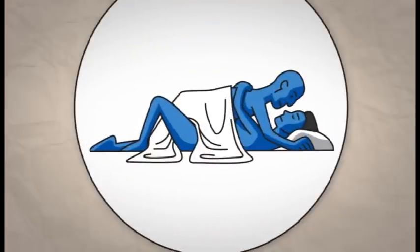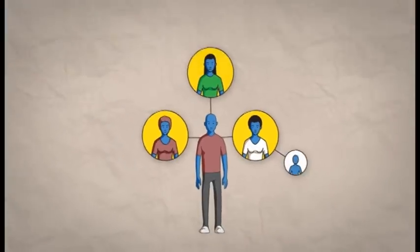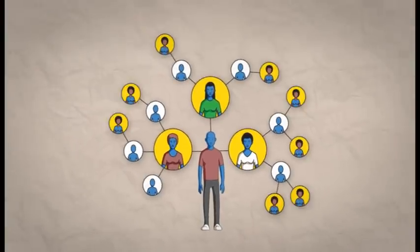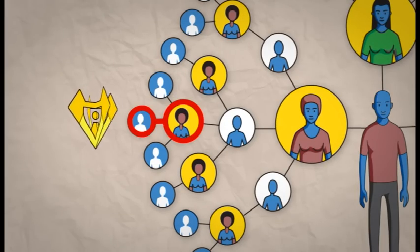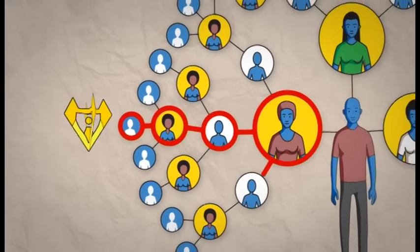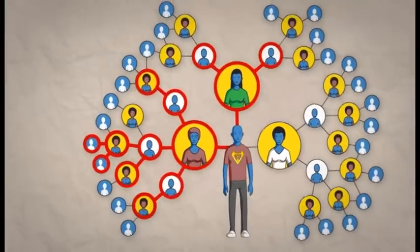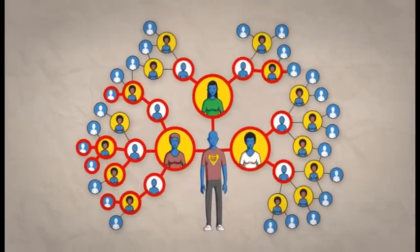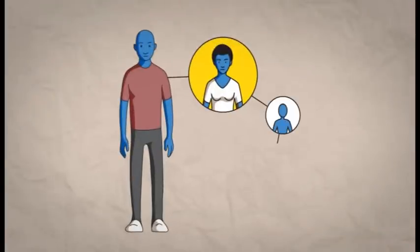Everyone who has ever had sex forms part of a sexual network. Your sexual network is a big picture of yourself, the people you've had sex with, the people they've had sex with and so on. If any one person in your sexual network has HIV, everyone else in the network runs the risk of being infected. If your sexual network is large, there is a greater risk that the people in the network will spread HIV. If your sexual network is small, there is a smaller risk of HIV spreading.